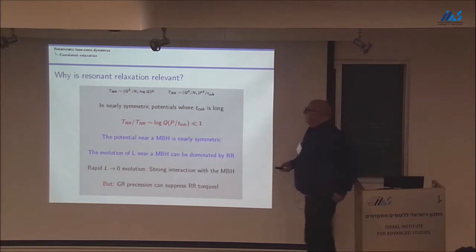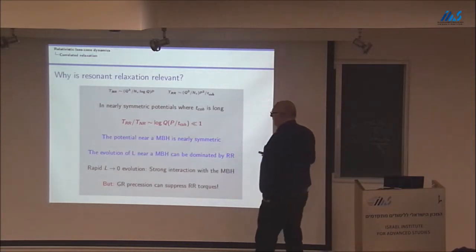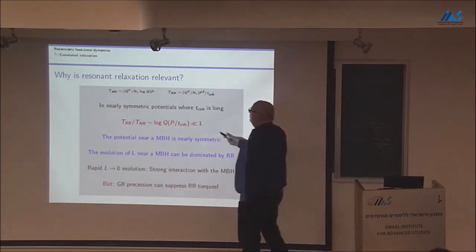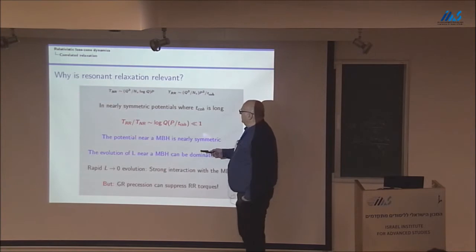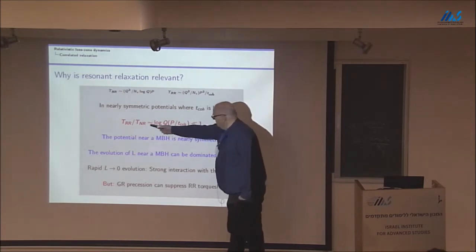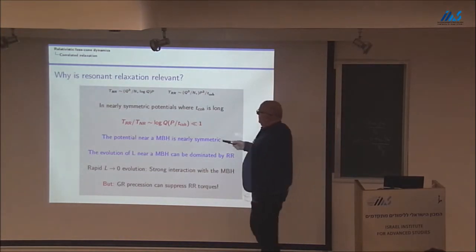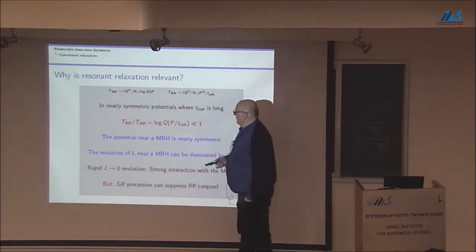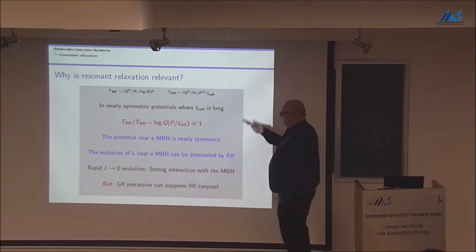So, the reason that resonant relaxation is potentially very important or should worry us, at least until we convince ourselves that it is not relevant for any particular question is, when you compare the time scales, you find that the resonant relaxation time scale can be orders of magnitude shorter than two body, which I call here NR for non-resonant relaxation. As long as the coherence time is a large number, longer than by some large factor, fraction than the period time. And if that's the case, these torques can rapidly shift anything on a nearly circular orbit to a nearly regular orbit and therefore induce a very fast interaction with a black hole.